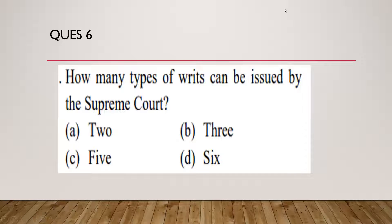Question number six: how many types of writs can be issued by the Supreme Court? The Supreme Court under Article 32 issues writs. There are five types of writs: one is habeas corpus, second is mandamus, third is prohibition, fourth is certiorari, and fifth is quo warranto. These five writs are different in their functions. They can be issued to any authority — any governmental, judicial, quasi-judicial, or administrative body — when the fundamental right of a citizen is encroached upon under Article 32. This is why Article 32 is referred to as the heart and soul of the Constitution.